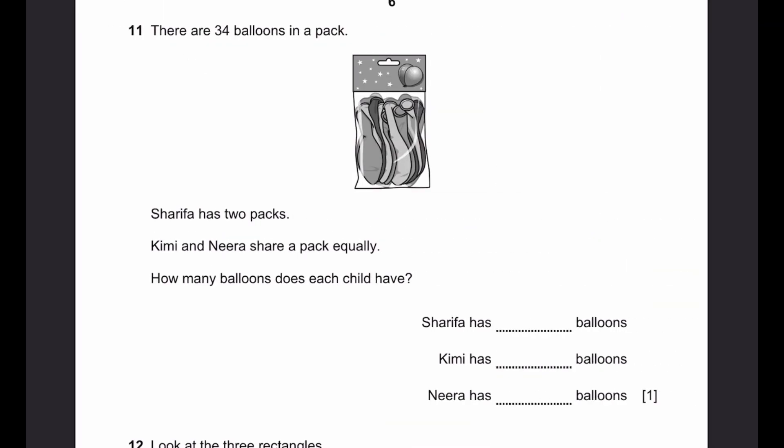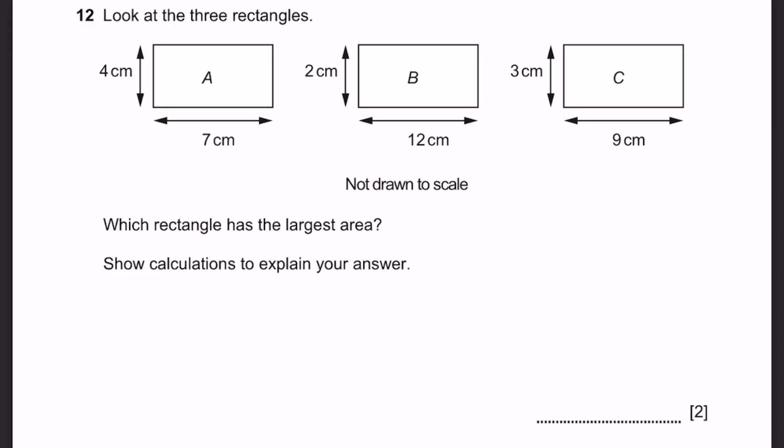Question 11. There are 34 balloons in the pack. Sharifa has two packs. Kimi and Nira share a pack equally. How many balloons does each child have? Sharifa has 34 times 2, which is 68 balloons. Kimi has half of the pack, which is 34 divided by 2, 17 balloons. Nira also has 17 balloons because they share a pack equally.